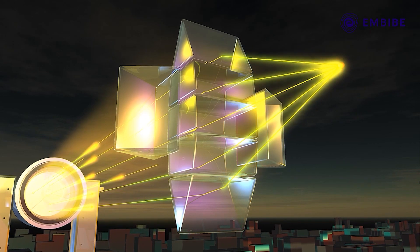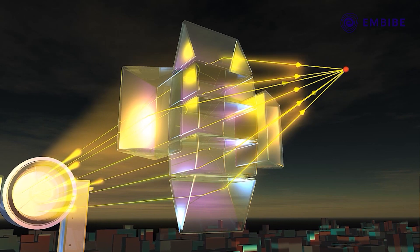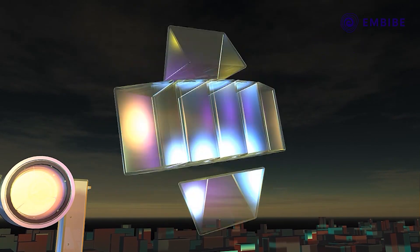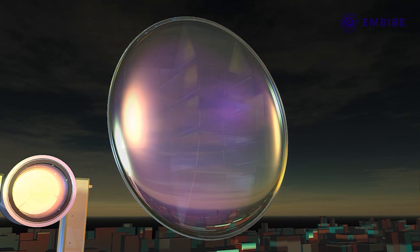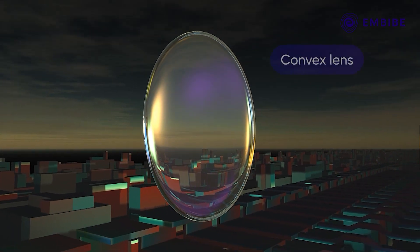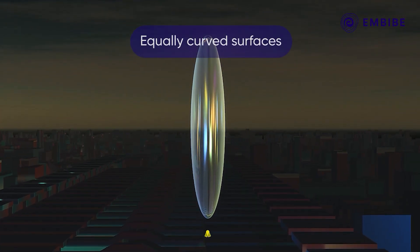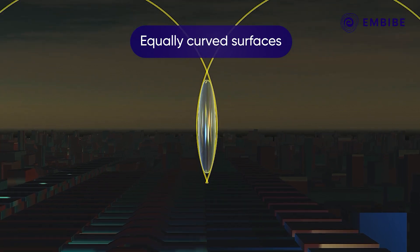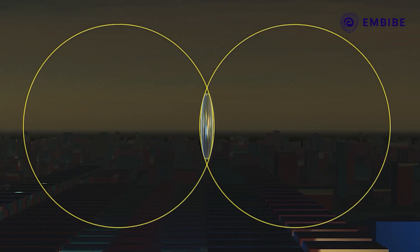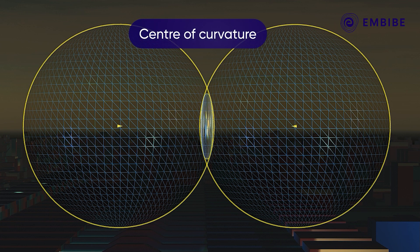then the incident rays emerging from them also converge at the same point. A single piece of glass formed in this fashion is called a convex lens. We can consider these equally curved surfaces of lens to be small parts of spheres. The center of these spheres is called the center of curvature of the lens.